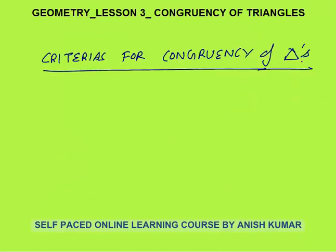Next are the criteria for congruency of triangles. It is not necessary that all three sides as well as all three angles must be equal for the triangles to be congruent. There may be fewer conditions that are sufficient.